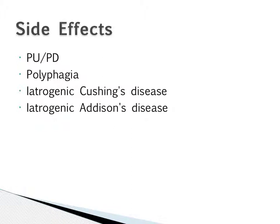When blood levels start to decrease and you stop treatment, the body is unable to make glucocorticoids on its own — this is called iatrogenic Addison's disease, or hypoadrenocorticism. You can prevent iatrogenic Addison's disease by using the lowest dose possible and withdrawing steroids gradually. This allows the adrenal cortex time to kick back on and start producing its own natural glucocorticoids.